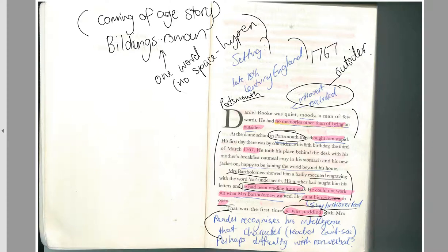Hello Year 12 students studying The Lieutenant. This is our first lesson — we're going to start at the beginning. It's by Kate Grenville. Some say 'leftenant,' others say 'lieutenant.' Both pronunciations are acceptable in Australian English. In Britain they say 'leftenant,' in America 'lieutenant.' The author herself calls it 'The Lieutenant,' which is why I'll try my best to use that pronunciation.